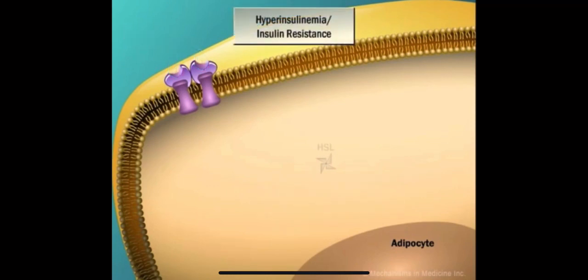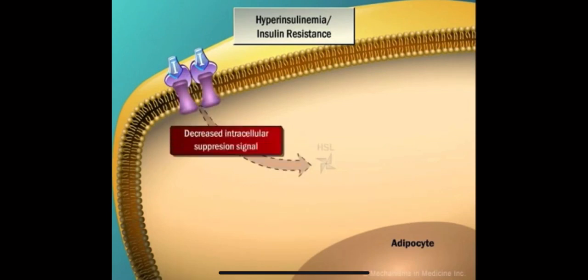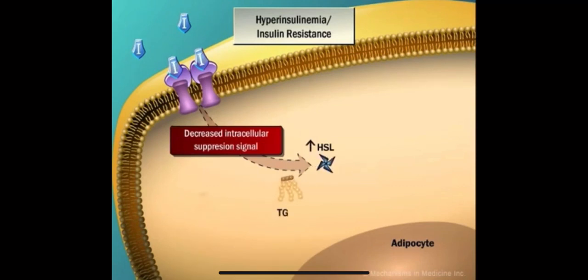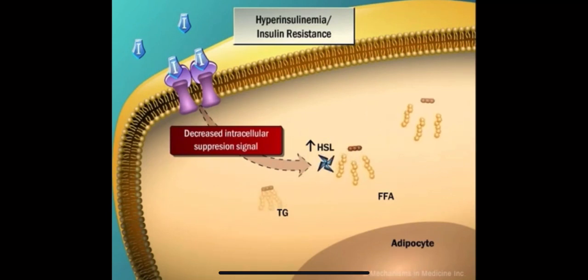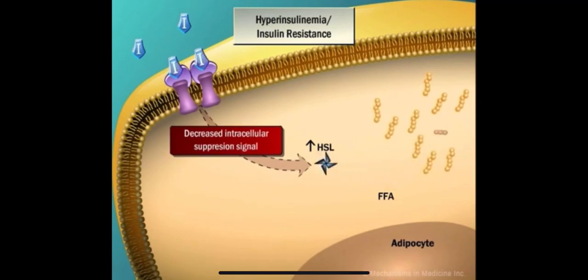Sometimes, for a number of reasons, the intracellular signal following insulin's binding to its receptor is not properly transmitted. As a result of this insulin resistance, the activity of hormone-sensitive lipase is not suppressed. This leads to an increased activity of hormone-sensitive lipase, causing the hydrolysis of triglycerides. When this occurs, glycerol and free fatty acids form as products, and free fatty acids are then eventually released into the circulation.